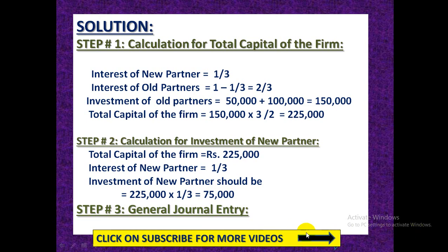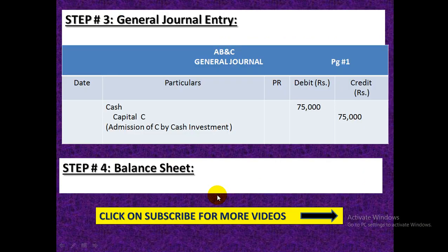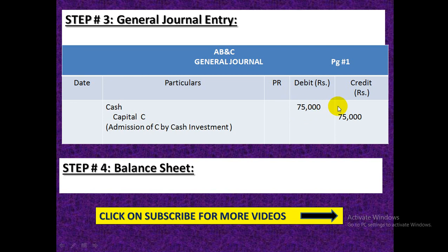In Step 3, we record the journal entry. The firm is ABC. In the journal, we debit cash for the amount C brings, and credit Capital C. These two accounts will appear in the balance sheet after admission of C — cash will be increased by this amount and Capital C will be mentioned under equity.